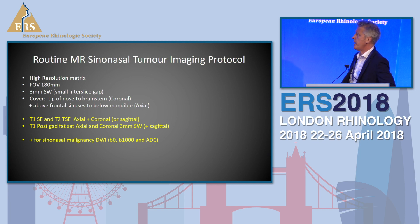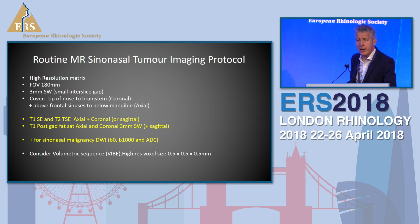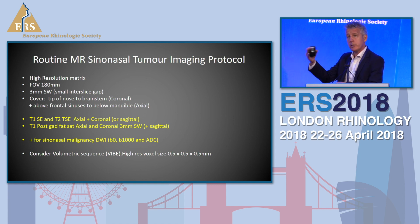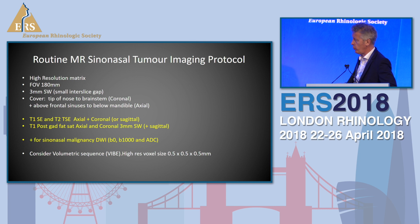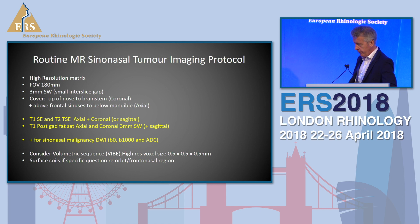For sinonasal malignancy, we always use diffusion-weighted imaging. You should also consider volumetric imaging because you can do one sequence and reconstruct in whichever plane you want. You should consider surface coils - if you're looking at a tumour that's superficial on the nose or going into the orbits, you should consider using surface coils to get really superior detail.